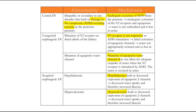The acquired type of nephrogenic diabetes insipidus can be due to hypokalemia or hypercalcemia. In both cases, there is decreased expression of aquaporin-2 channels, which decreases water uptake and therefore increases diuresis.